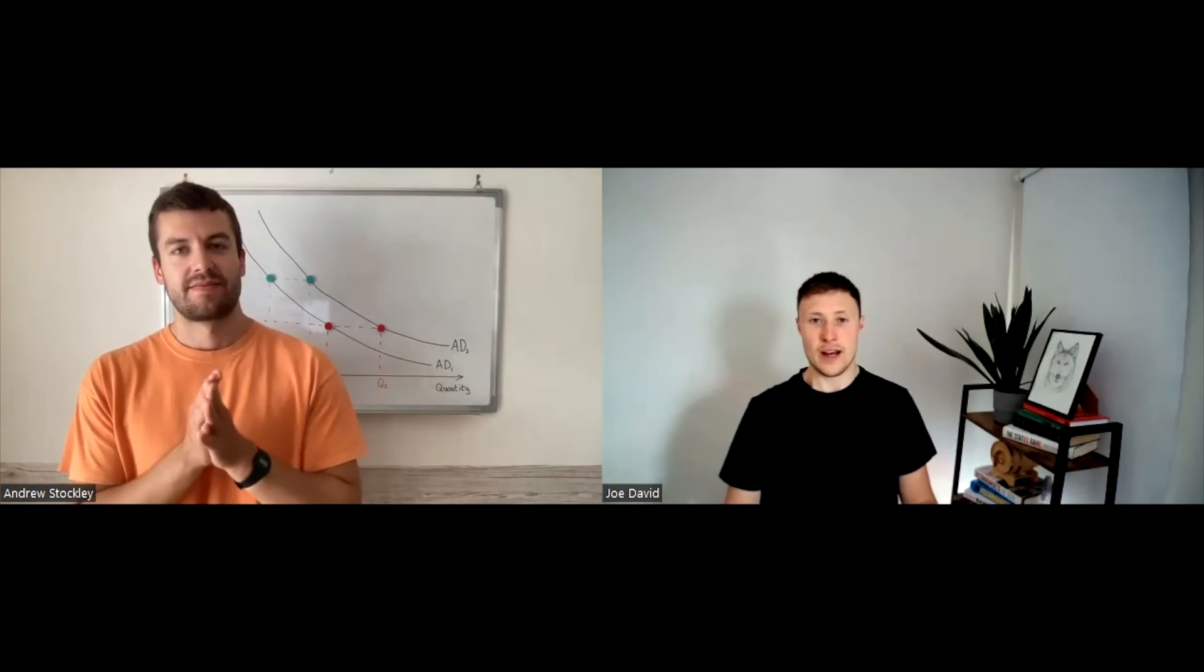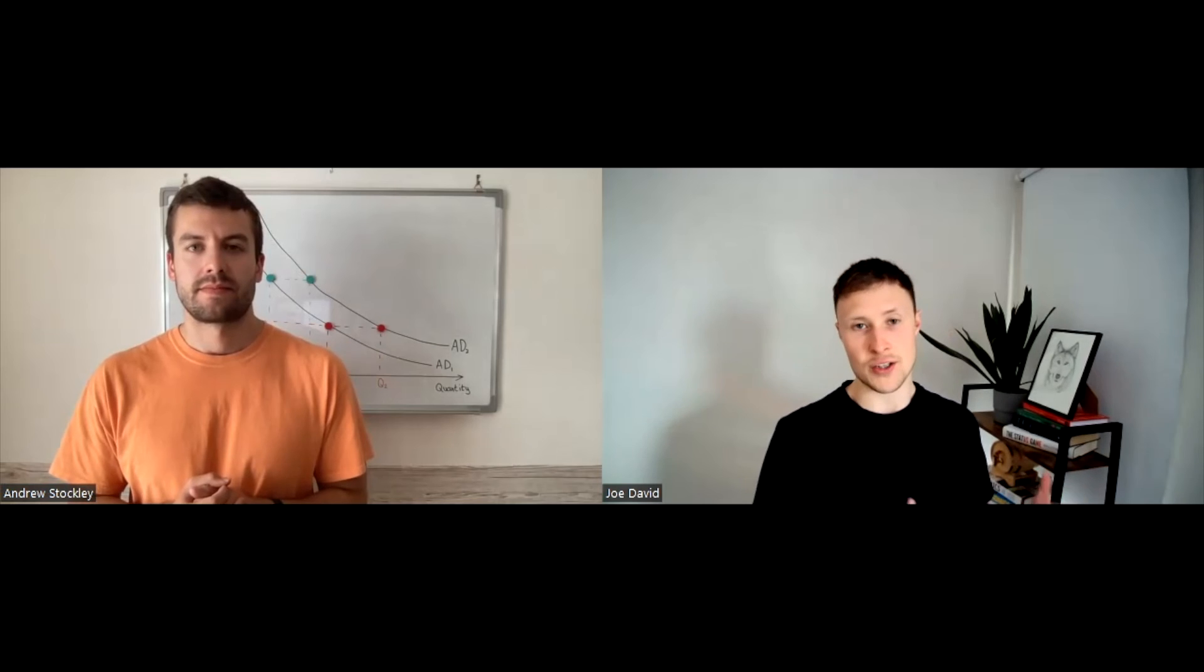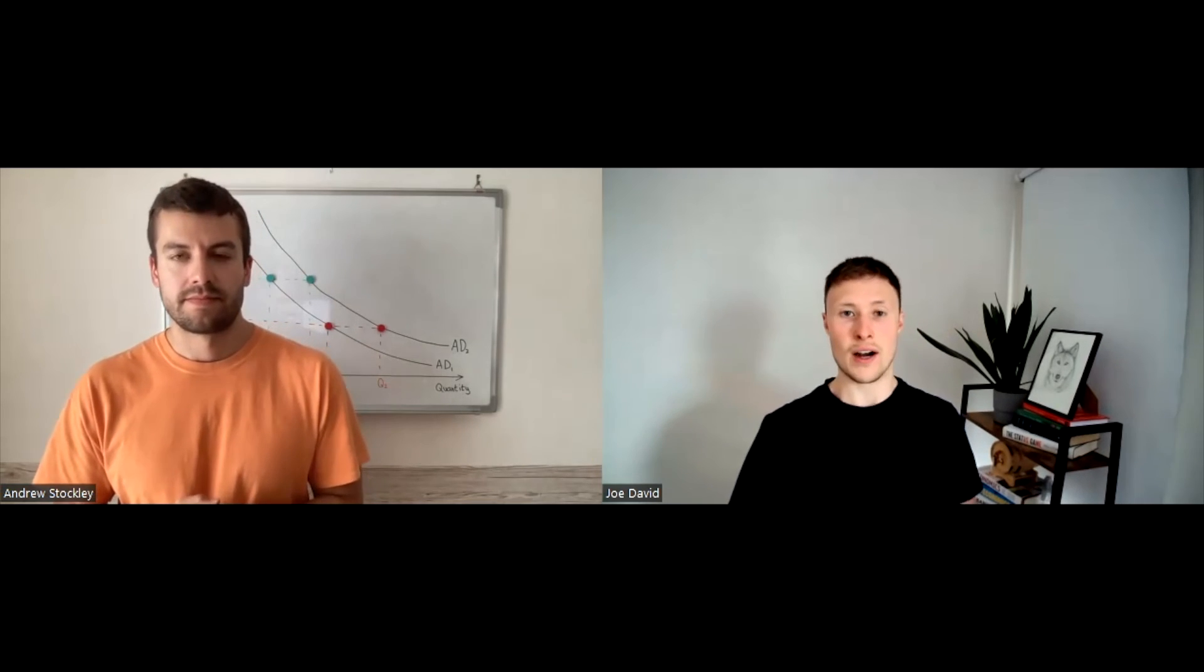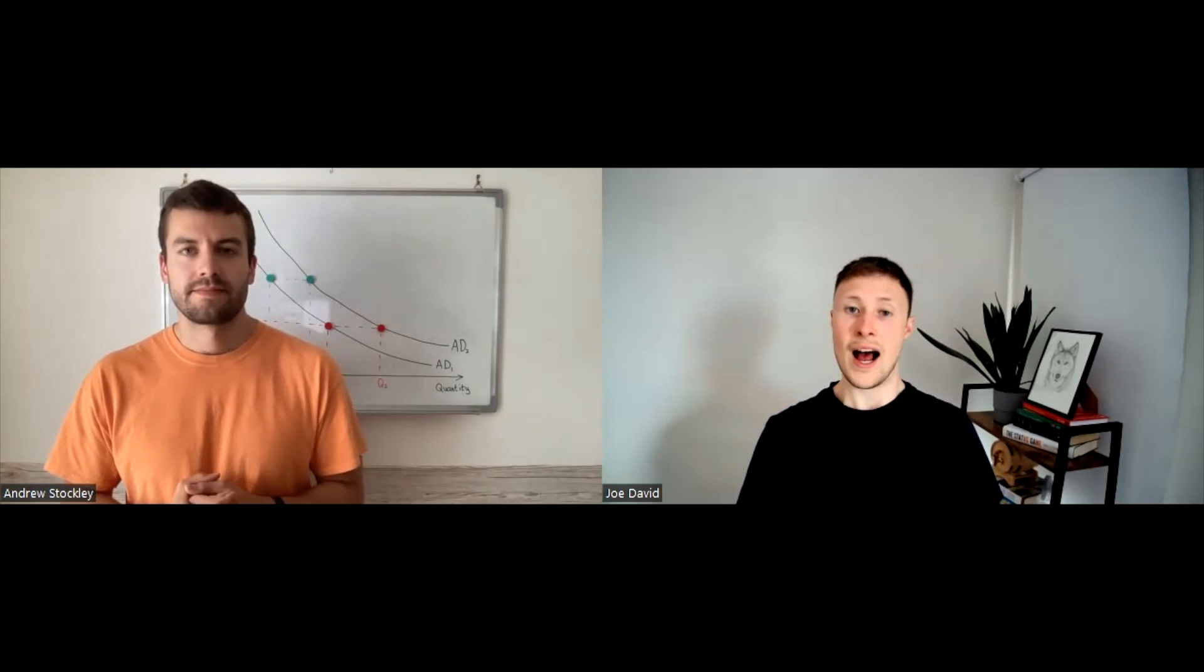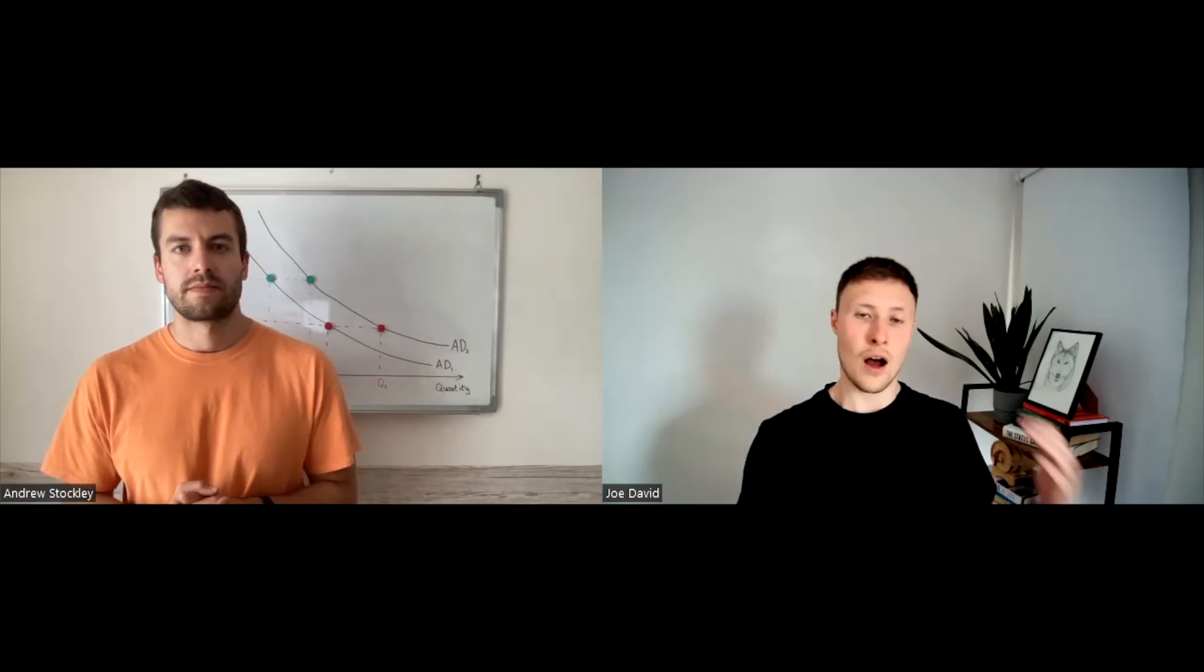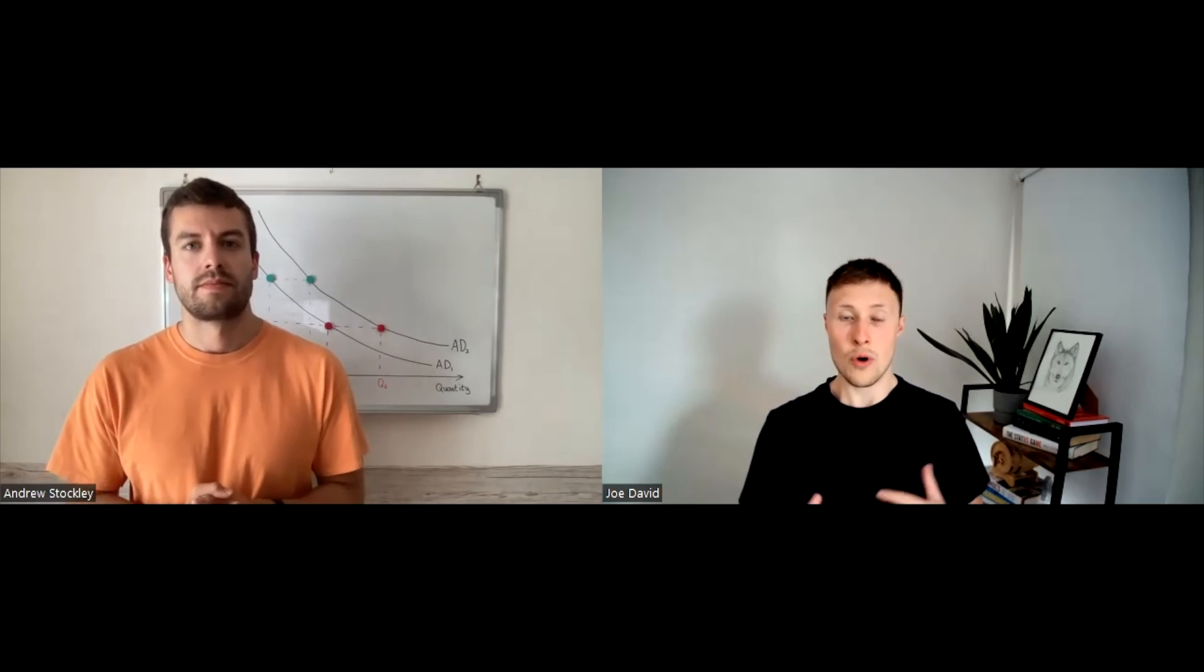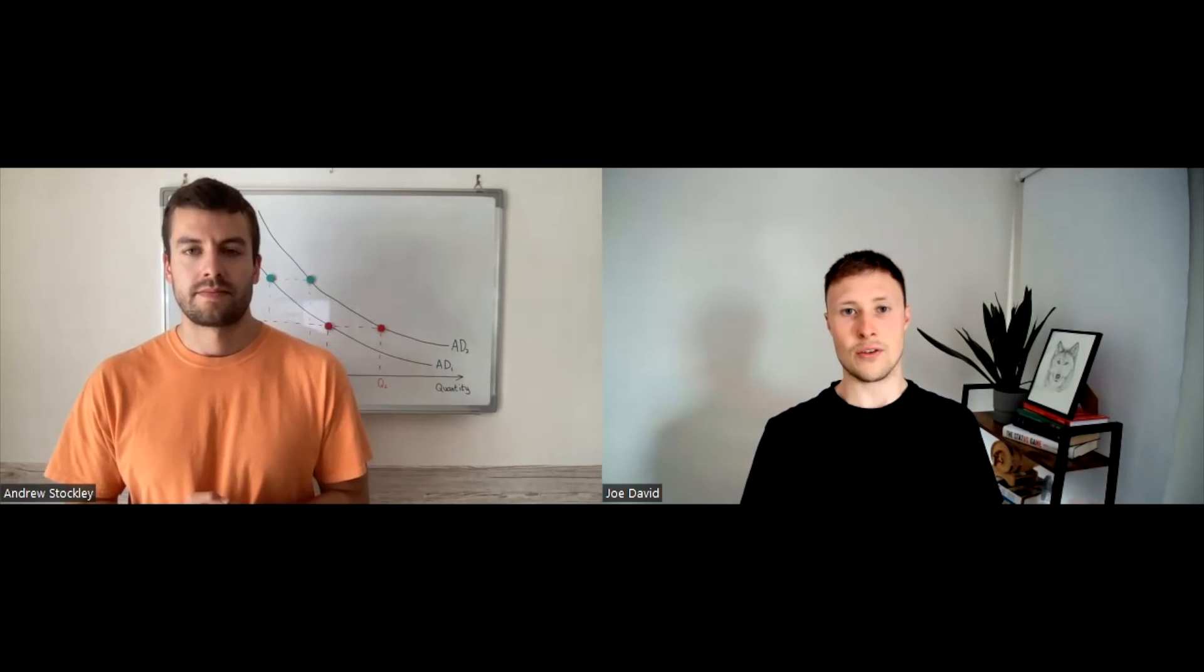So in summary, all these examples show that the aggregate demand shift to the right, so aggregate demand is overall increasing at every price. And if any of these components of aggregate demand, whether that be C, I, G, were to decrease, then we would see a leftward shift in the aggregate demand curve, which would mean that quantity at every price decreases.